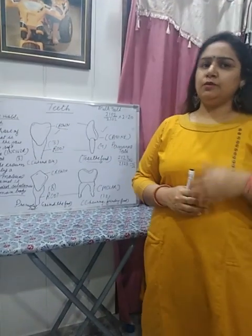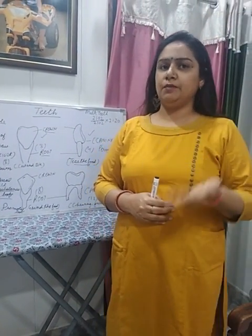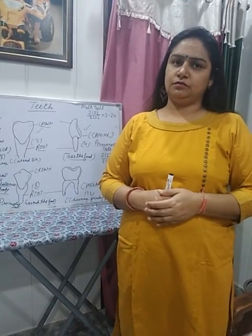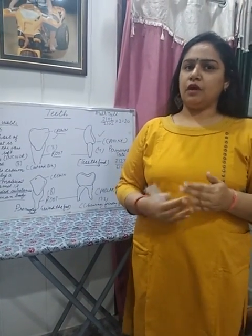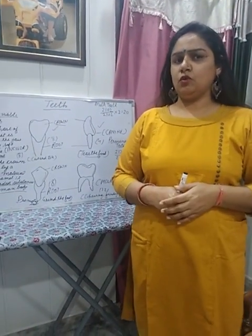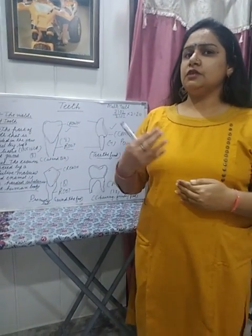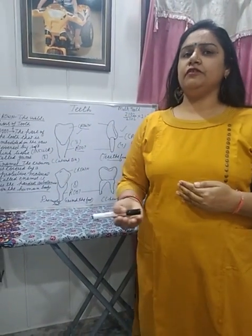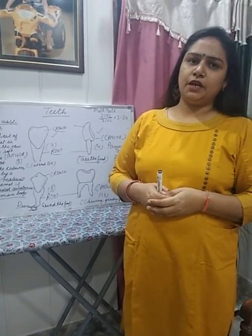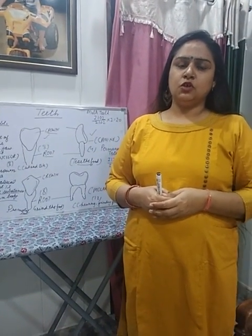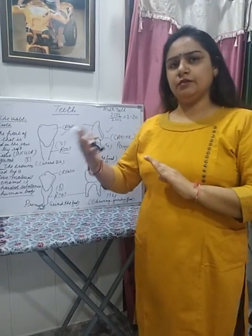The milk teeth begin when the baby is six months old. After six months, they are replaced by the second set of teeth — the permanent teeth. Milk teeth are 20 in number.